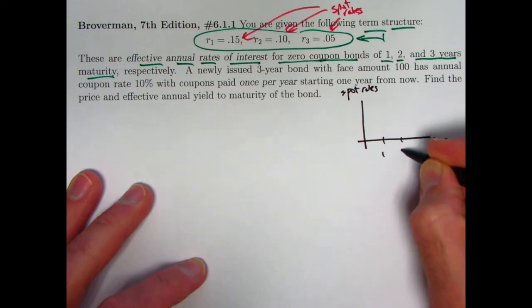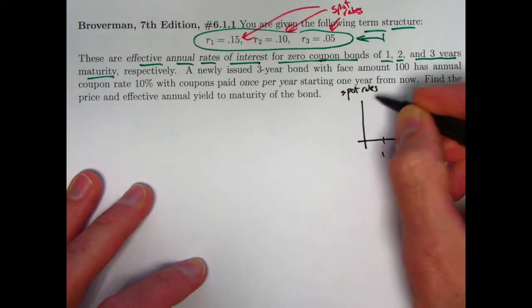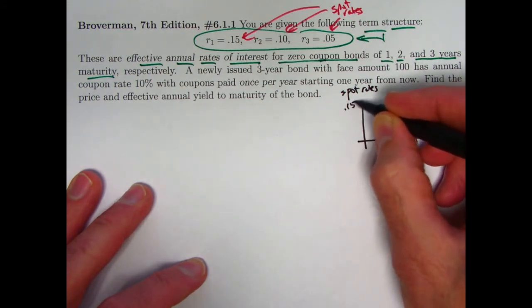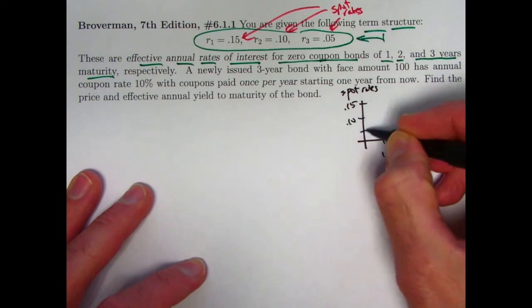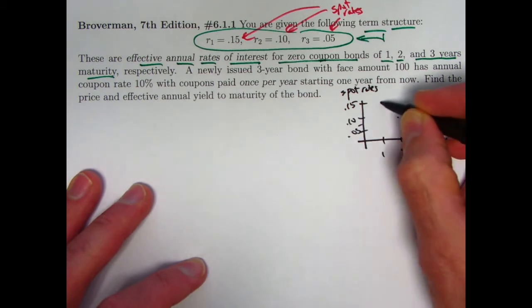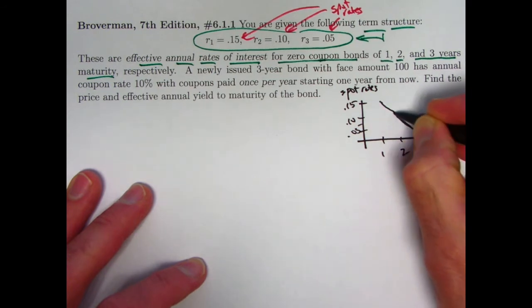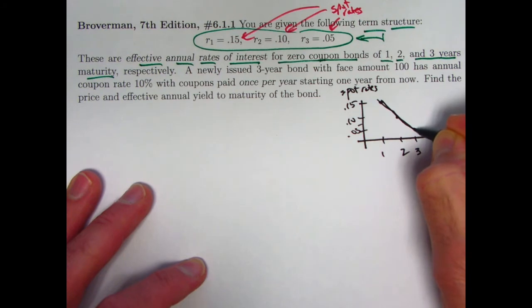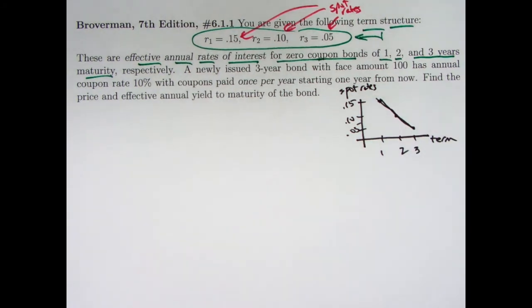Terms can be one, two, or three years in this example, and these numbers go down linearly from 0.15 to 0.10 to 0.05. You can plot those points and connect them with a straight line. In general, this thing is going to be a curve, but this curve seems to be probably well approximated in this case with a straight line.